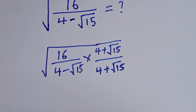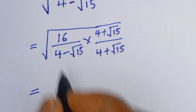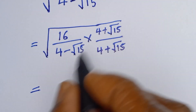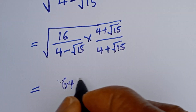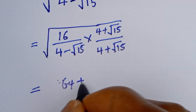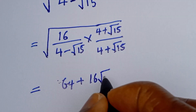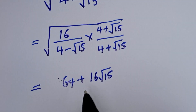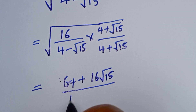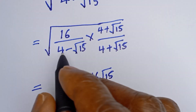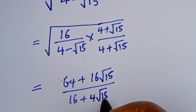Now I want to multiply everything. This is equal to: 16 times 4, that is 64, plus 16 times root of 15, we have 16 root 15, divided by 4 times 4, that is 16, plus 4 times root of 15, we have 4 root 15.